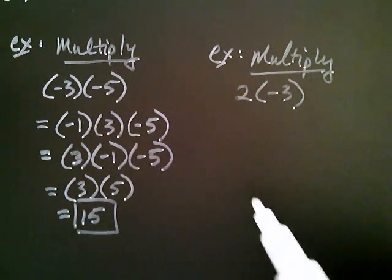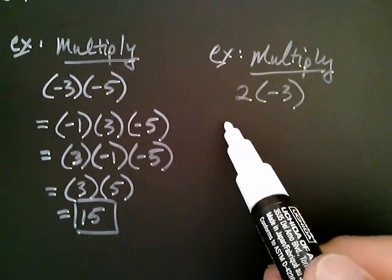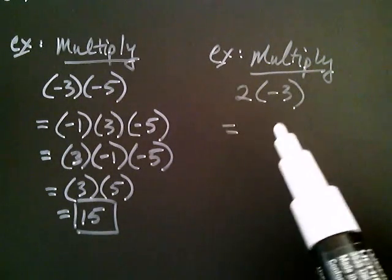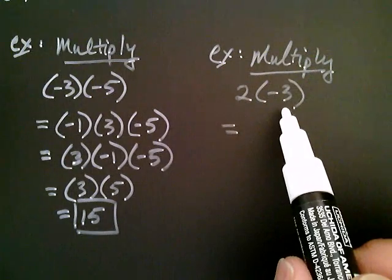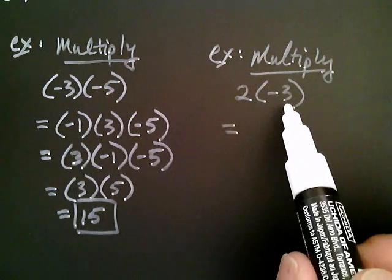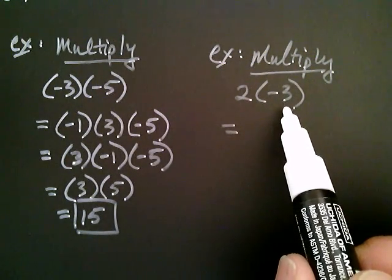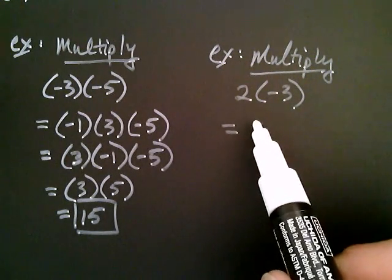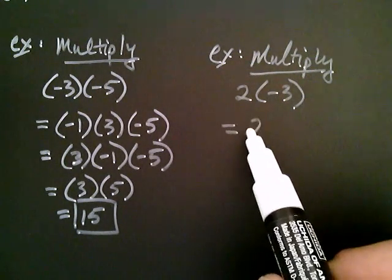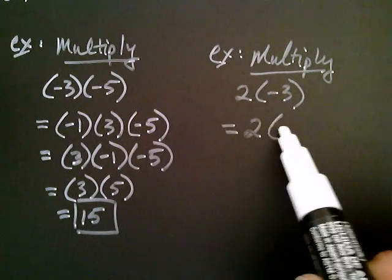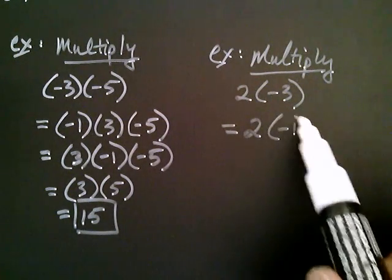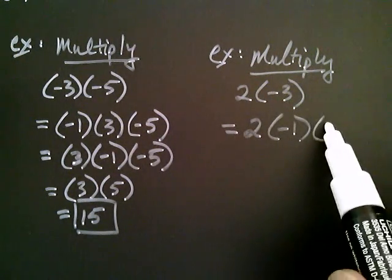Playing the same game — I can write the negative as negative one times something. So let's leave the two alone, and negative three is the same as negative one times three.